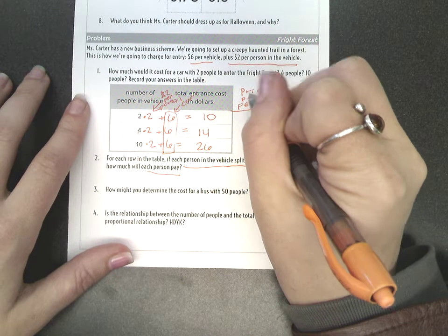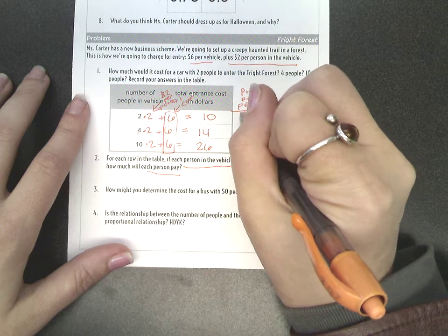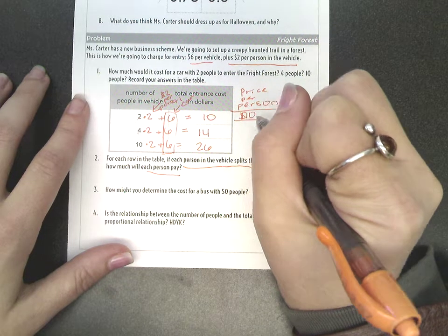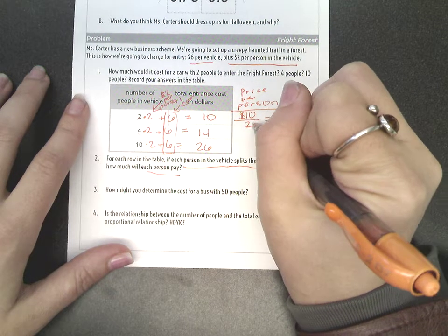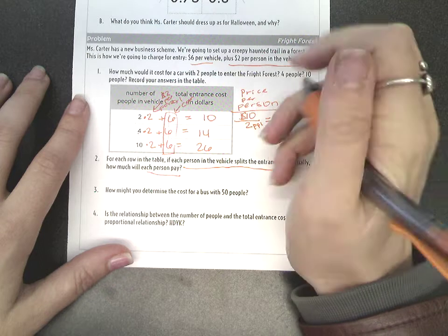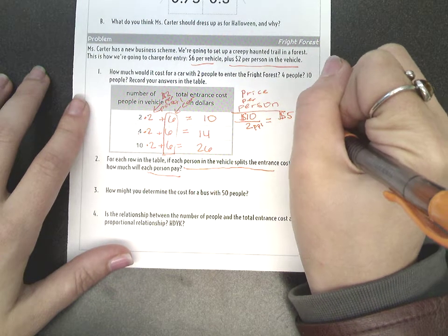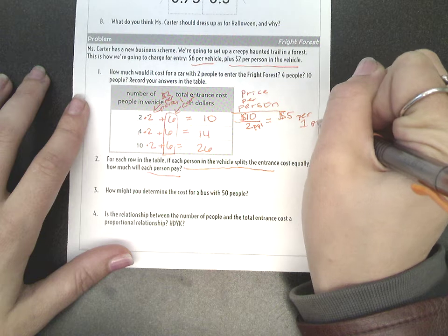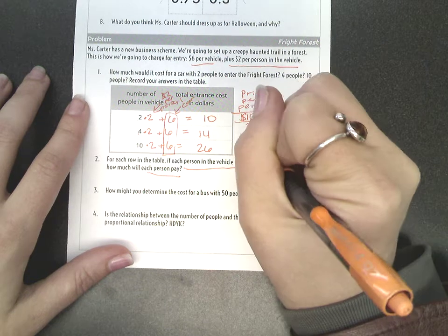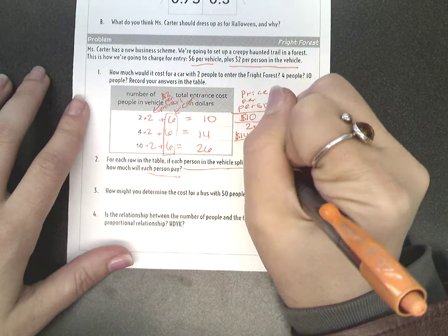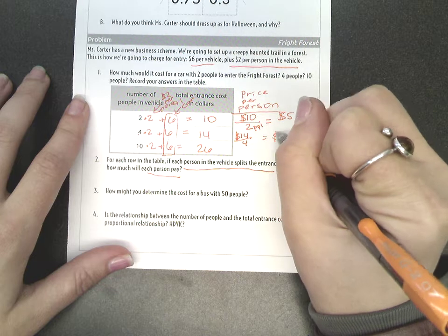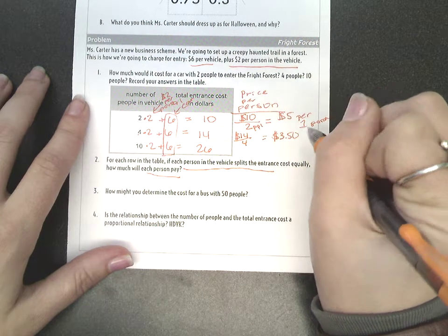And a few people said that if you wanted to figure out the cost per person, you could take the total cost of $10 and split it up among the people. So if we have $10 for two people, that's going to be the same as $5 per one person. If we have $14 split over four people, that would be the same as $3.50 per person.